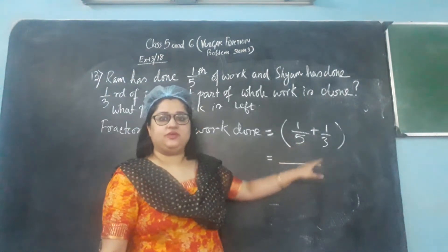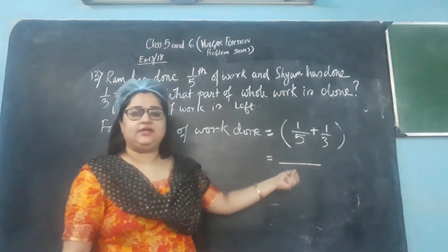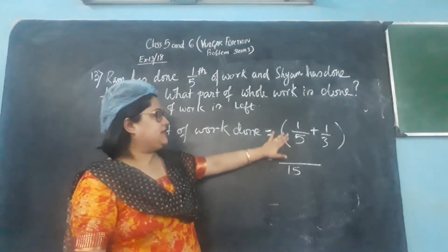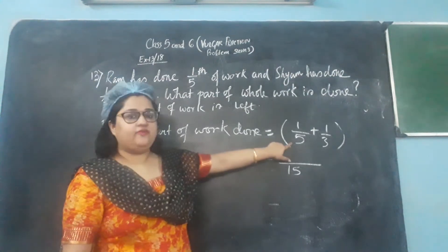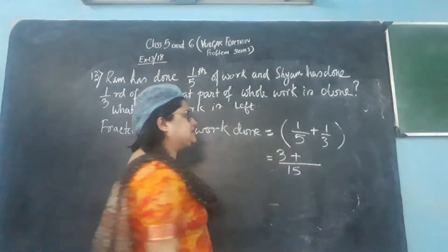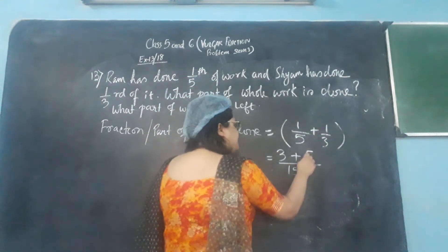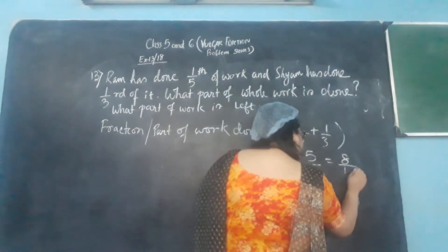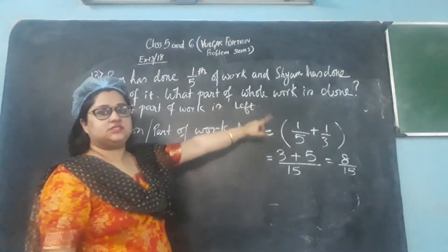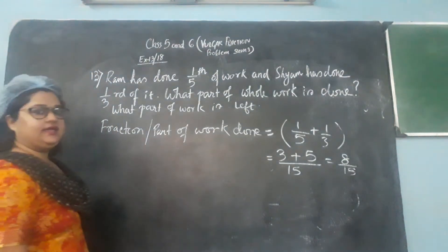What will be the LCM of 5 and 3? Both are prime numbers, so we just multiply to find the LCM: 5 × 3 = 15. Now compare the denominators and write the numerators. 5 × 3 = 15, multiply that 3 with 1 to get 3. Then 3 × 5 = 15, multiply that 5 with its numerator 1 to get 5. So 3 plus 5 over 15 gives 8 by 15. So 8/15 is the total fraction of work done by both of them. This is the first answer.